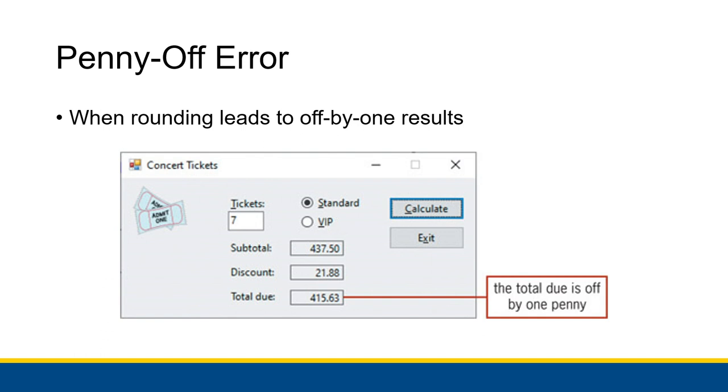So the penny off error is an error that can come up when you're doing financial calculations regarding money, or you can have similar versions of this error outside of money, but it happens a lot when you're working with money.